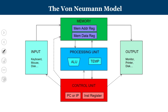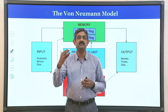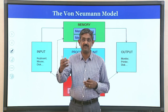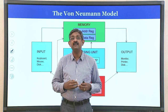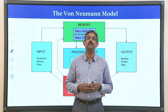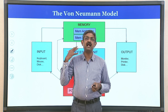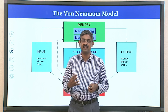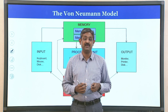The Von Neumann model is one of the popular architectures we see. It consists of programs stored inside memory. From memory we fetch the instructions and then perform decoding. The memory address register and memory data register act as the interface.